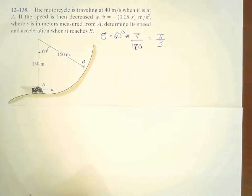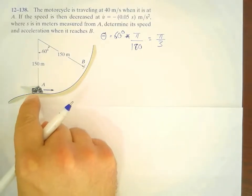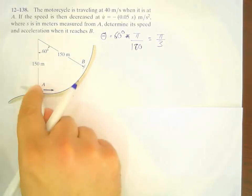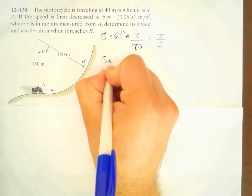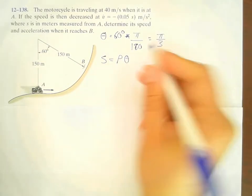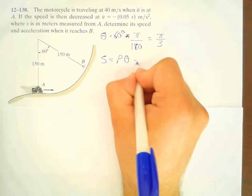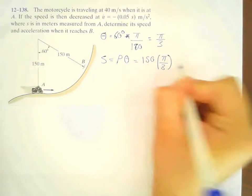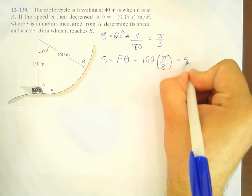Secondly, we need to calculate for the path, for the S, for the distance that the motorcycle went through from point A to point B here. So, S here equals to ρ times θ. ρ is the radius of curvature, θ is the angle. So, ρ is 150 multiplied by π over 3. We get here 50π.